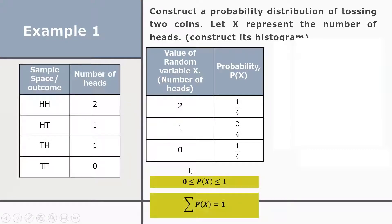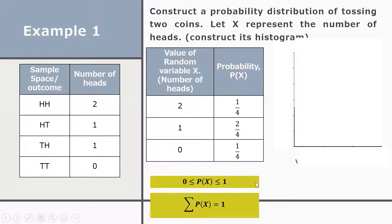Let's check if the two conditions are satisfied. First, the probabilities are between 0 and 1 — no negative probabilities and none greater than 1, so property one is satisfied. Second, the sum: 1/4 + 2/4 + 1/4 = 1, so property two is also satisfied. Now let's construct its histogram.